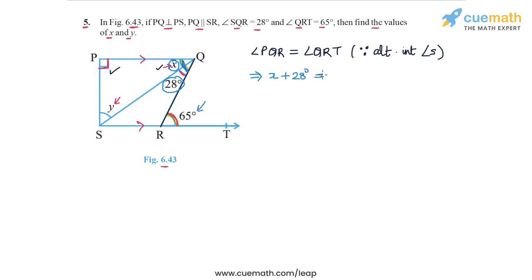And this is equal to QRT which we know to be 65 degrees. So x is simply 65 minus 28, which is equal to 37 degrees. So we found the value of x.